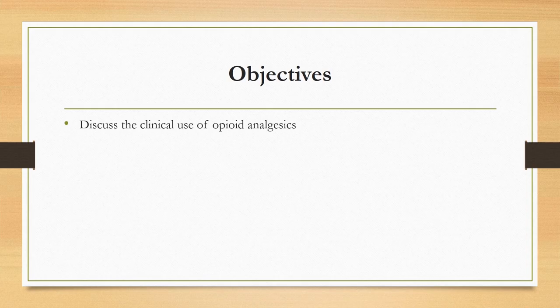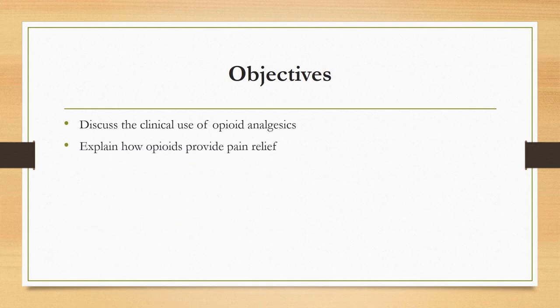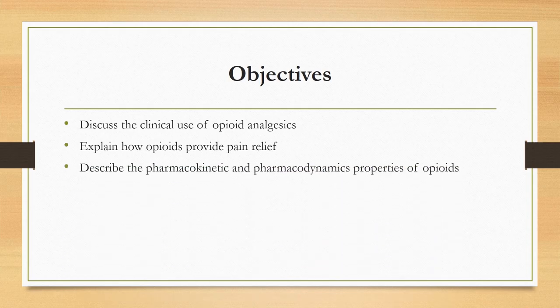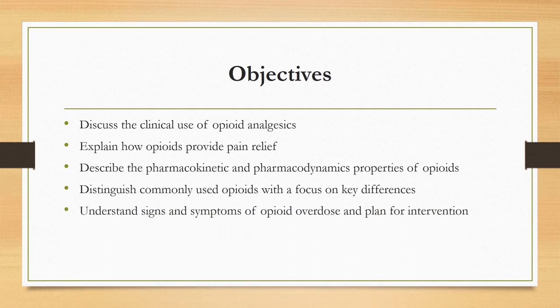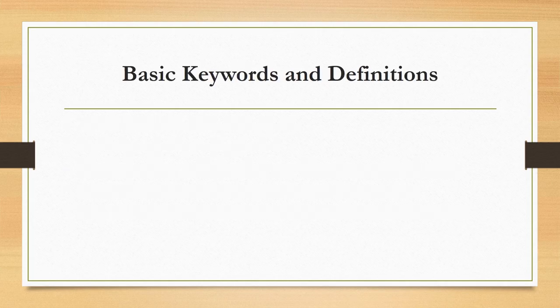With this in mind, objectives for this course will be to discuss the clinical use of opioid analgesics, explain how opioids provide pain relief, describe the pharmacokinetic and pharmacodynamic properties of opioids, and distinguish commonly used opioids with a focus on key differences. We will strive to understand signs and symptoms of opioid overdose and plan for appropriate intervention.